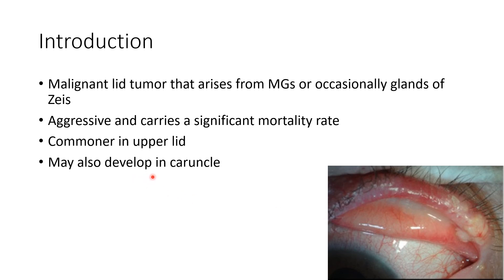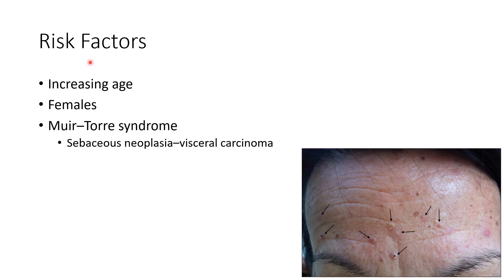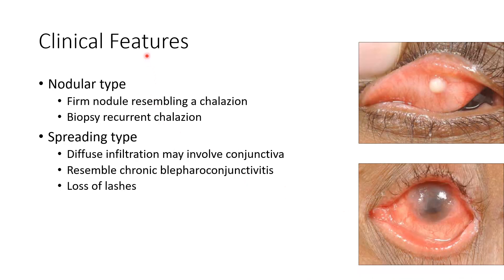It is commoner in the upper lid, as you can see in this picture, and it may also develop in the caruncle. Coming to the risk factors for sebaceous gland carcinoma: increasing age, females, and Muir-Torre syndrome are all risk factors. In Muir-Torre syndrome there will be sebaceous neoplasia and visceral carcinoma, as shown in this picture.